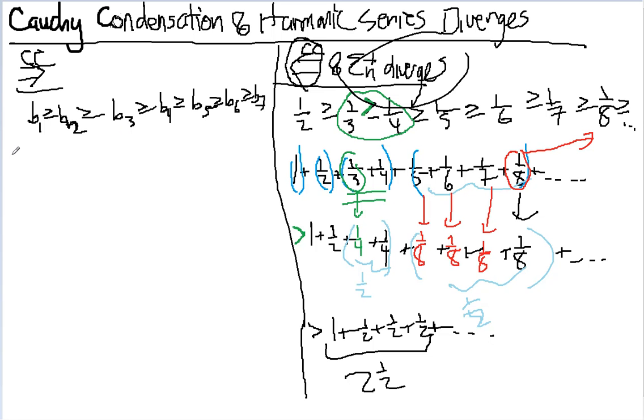So the main point here is that we're just going to be adding up b one plus b two plus b three plus b four plus b five plus b six plus b seven plus da da da da da.